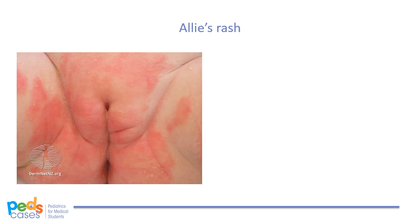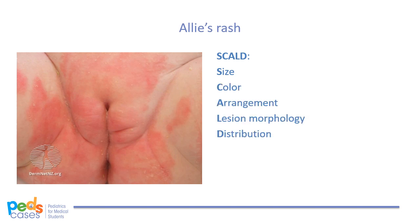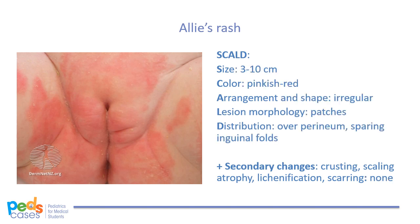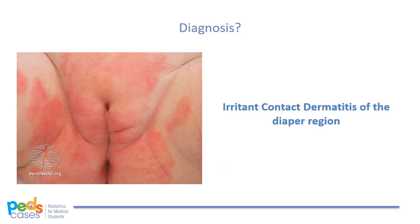Let's take a look at Allie's rash here on the screen. I've heard people use the SCALD mnemonic for describing lesions: S is for size, C for color, A for lesion morphology, L for distribution, and D for secondary changes such as crusting, scaling, atrophy, lichenification, or scarring. In Allie's case, we found extensive 3–10 cm pinkish-red patches that are irregular in shape and restricted to the perineum, sparing the inguinal folds. There were no pustules, crusting, scaling, or petechiae. She did not present with a fever or lymphadenopathy, and no rashes were noted anywhere else on her body. This is in keeping with the presentation of irritant diaper dermatitis, and the history from her parents supports this as well.